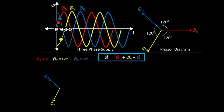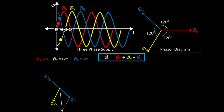We draw the original phasors. Since φR is 0, we remove it. φB is negative, so we extend it in the opposite direction. Then we draw the parallelogram from −φB and φY, join the point of intersection from the origin, and we get the phasor of total flux φT at instant 4.